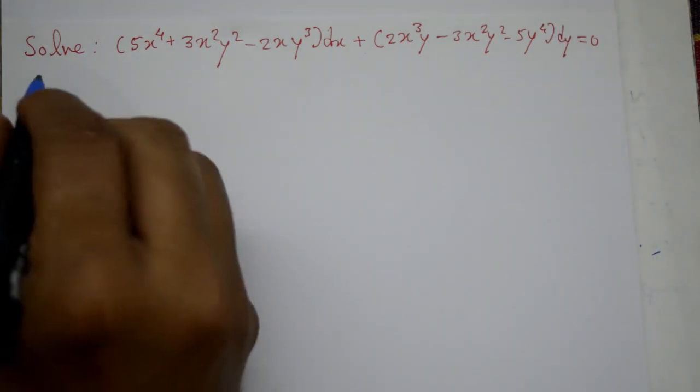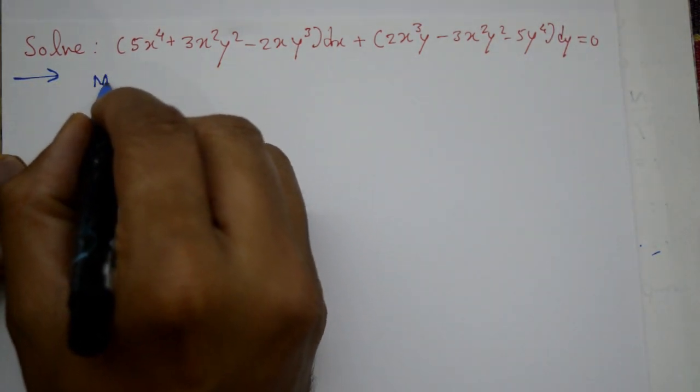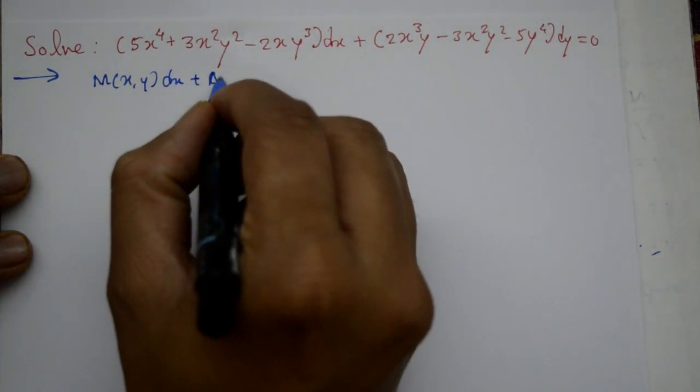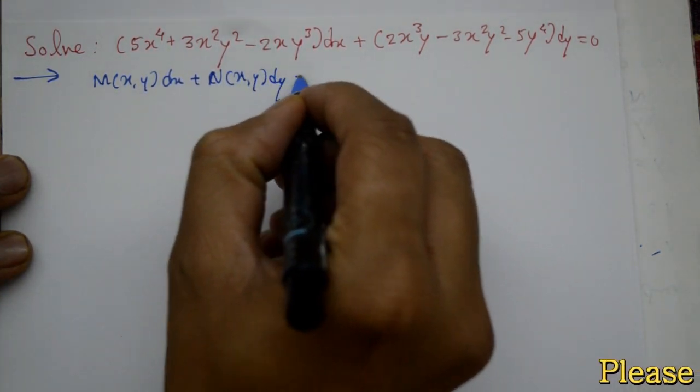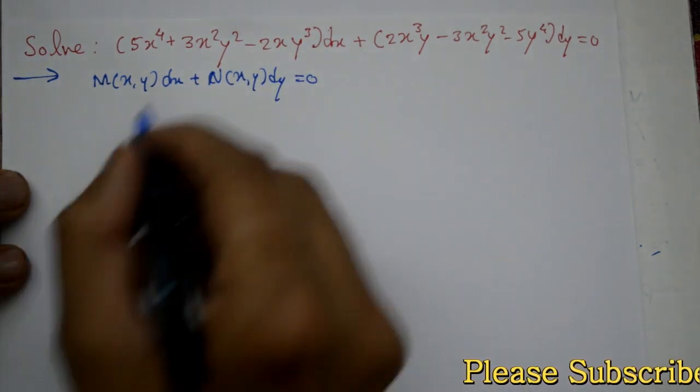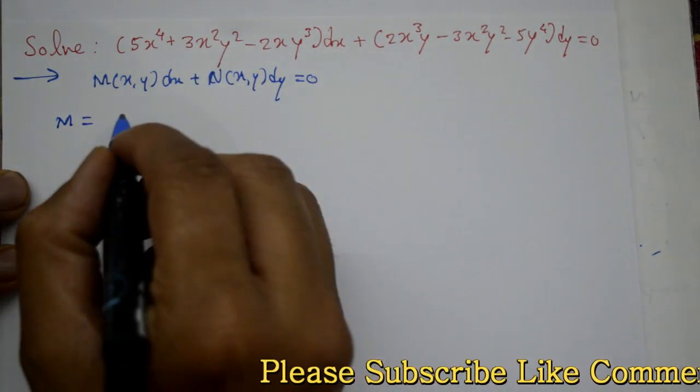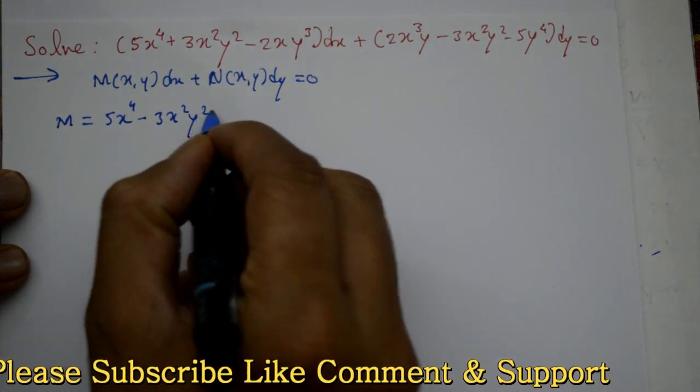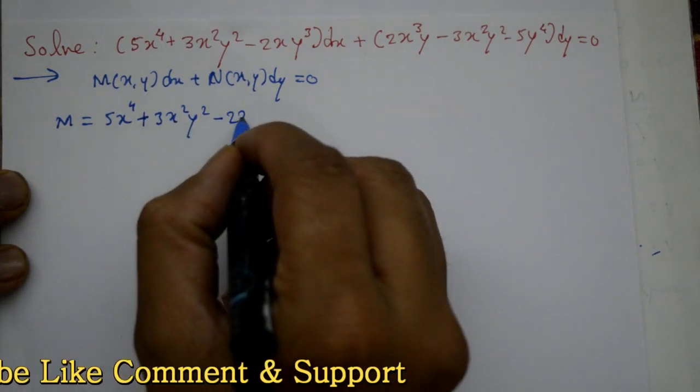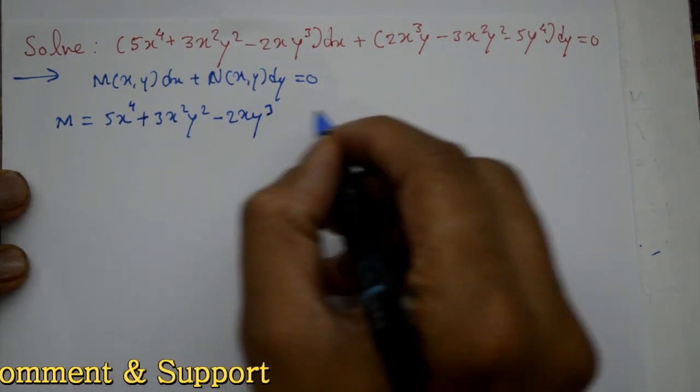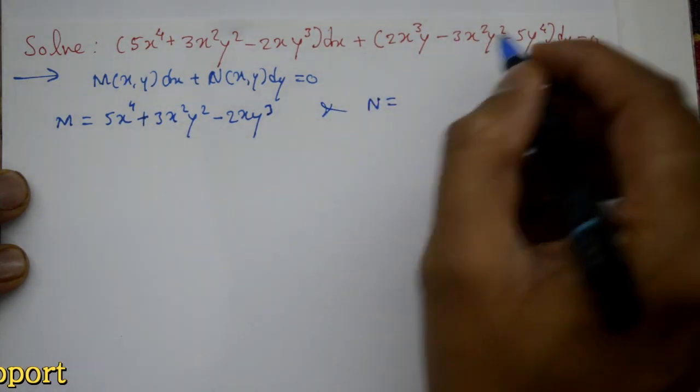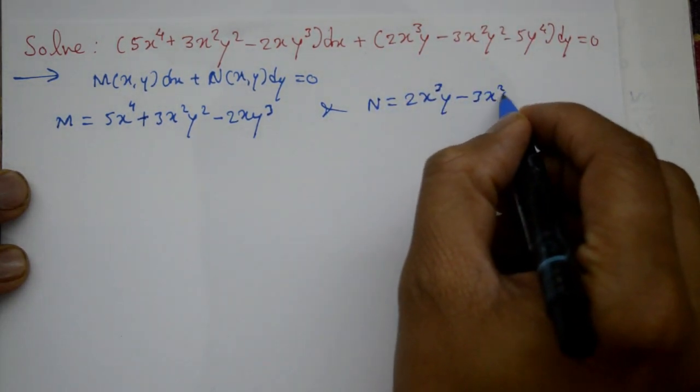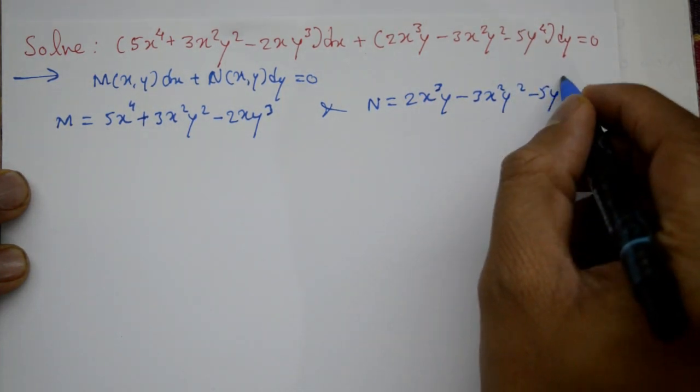Now the form is M(x,y)dx + N(x,y)dy = 0. Either M is equal to the term 5x^4 + 3x^2y^2 - 2xy^3, and N is equal to the part 2x^3y - 3x^2y^2 - 5y^4. First, we will check whether the given equation is exact or not, then we will do integration.